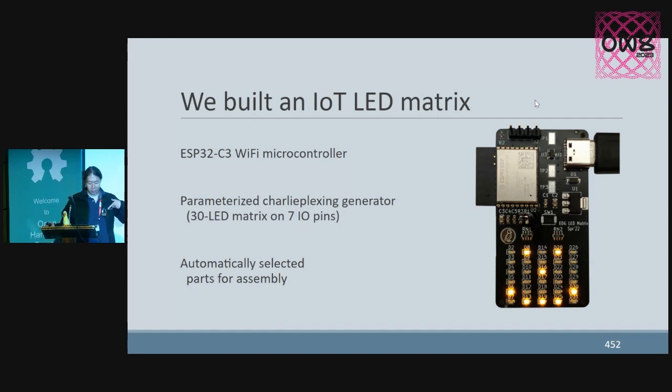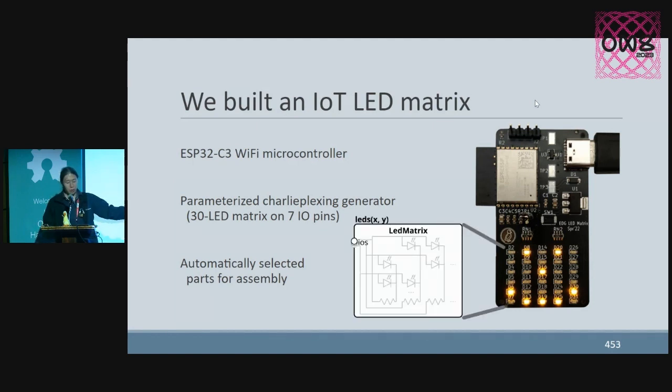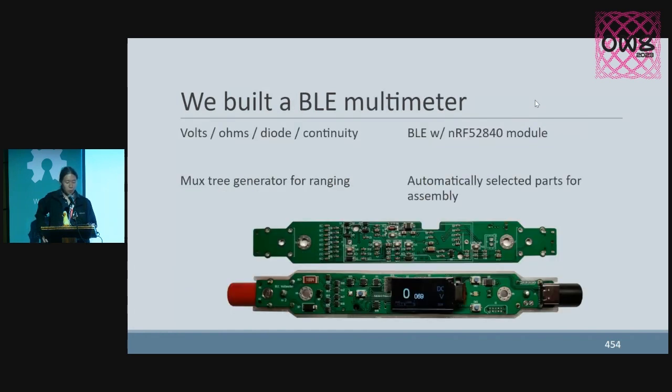This thing I have right here is an Internet of Things LED matrix. That's probably the closest to the keyboard. If you bring up your Wi-Fi, you can probably see it. Good luck connecting to it. But anyways, what it has is this parameterized LED matrix block that generates this pretty complex and even more nasty Charlie plexing circuit, which can drive 30 LEDs with just seven IOs. Below that, the resistors and capacitors also automate away the mundane parts selection work. This also scales up to more complex examples. For example, this Bluetooth stick multimeter. While the analog front end is kind of specialized, library-based design allows us to reuse sub-circuits like the mux tree generator and the boost converter. We've also built a bunch more boards because building boards is fun. That includes power converters, robot controllers, but I'm not going to go over them right now.